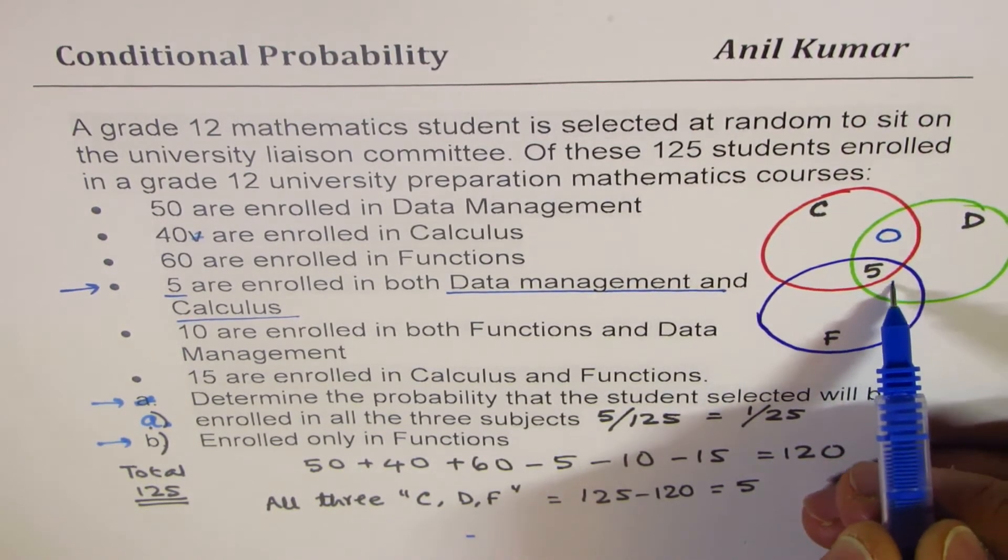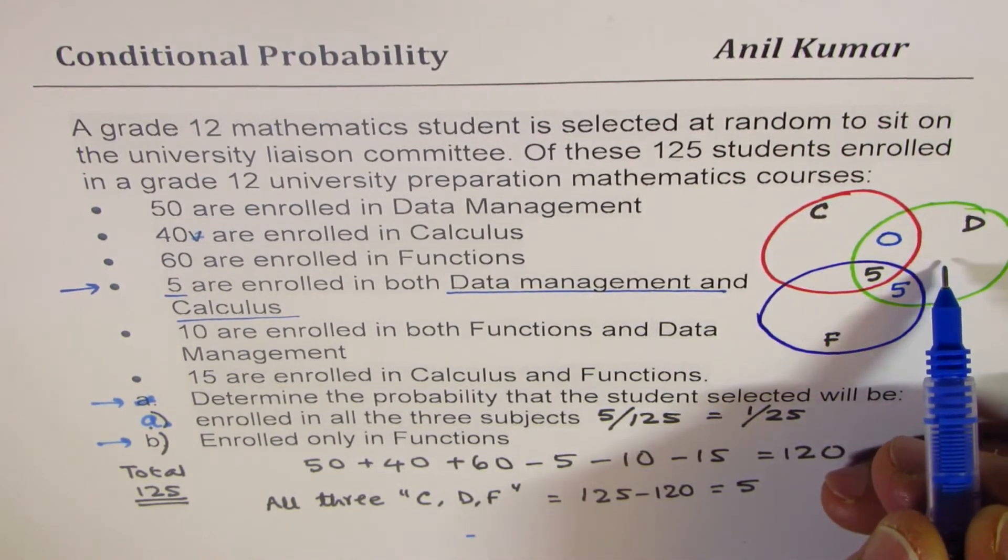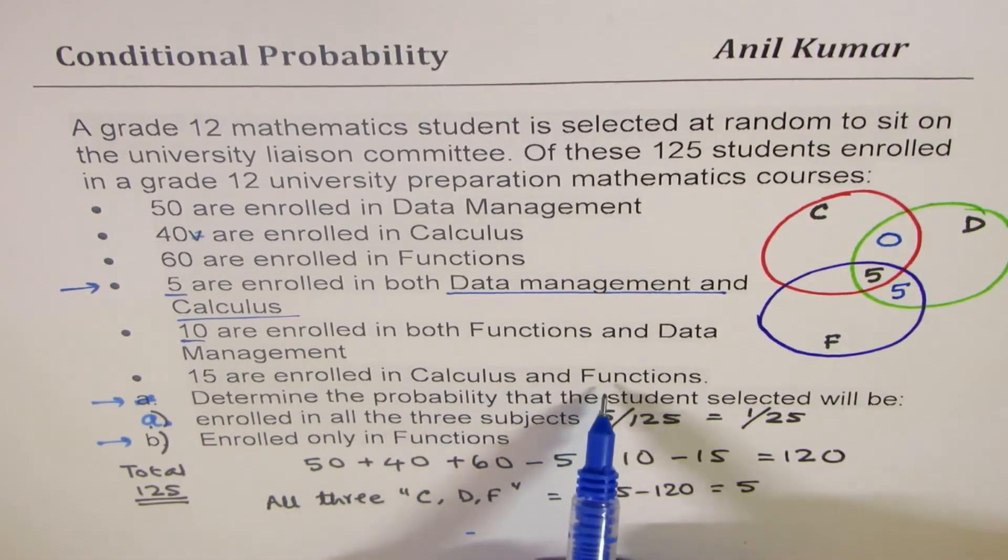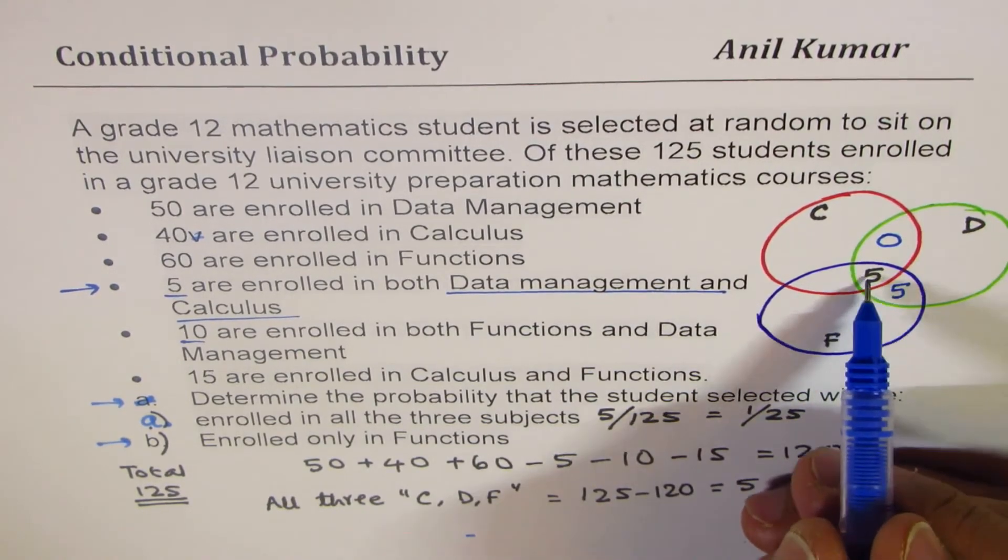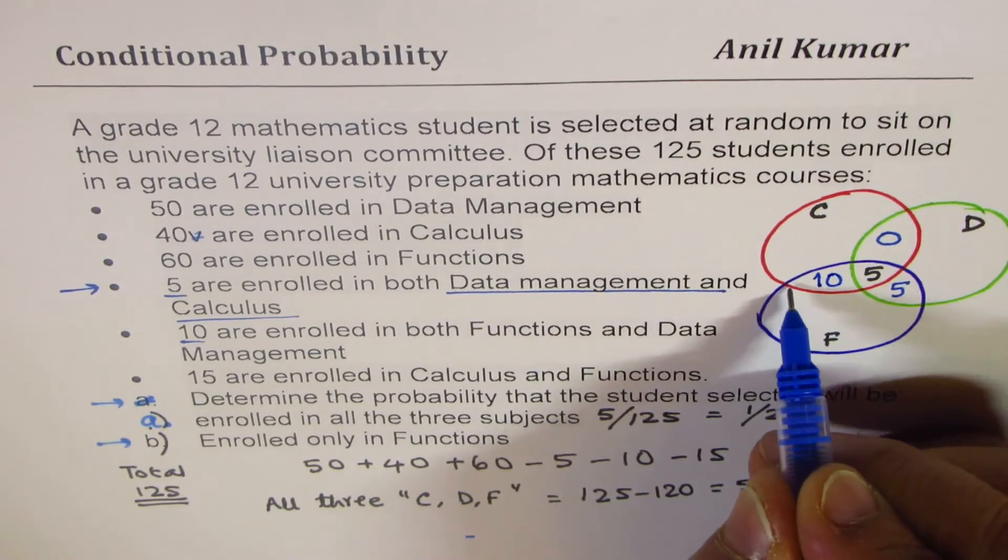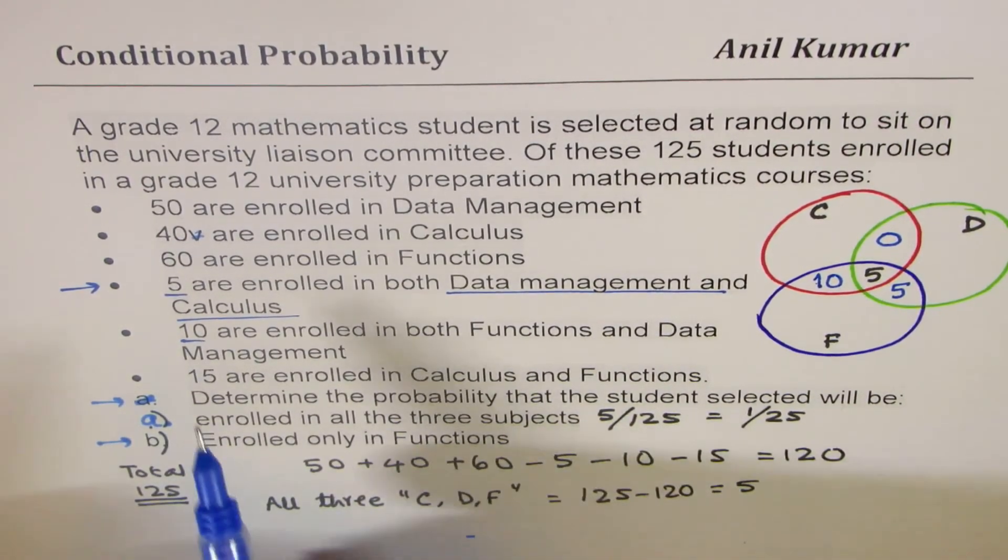Fifteen are enrolled in calculus and functions. Calculus and functions, 15. We have 5 so far, so ten more. That's the group, so 15. Now let's move on.